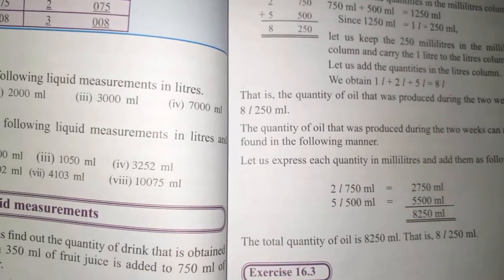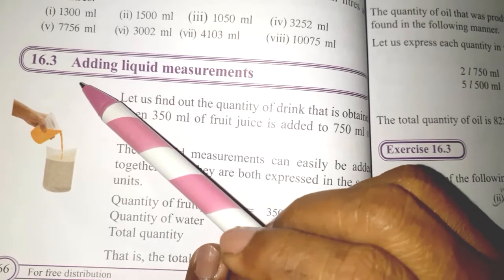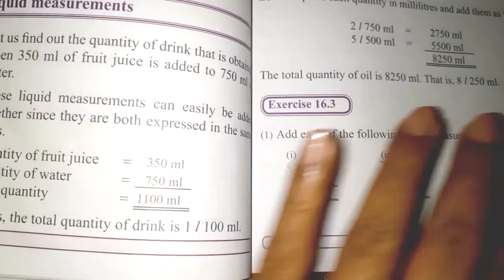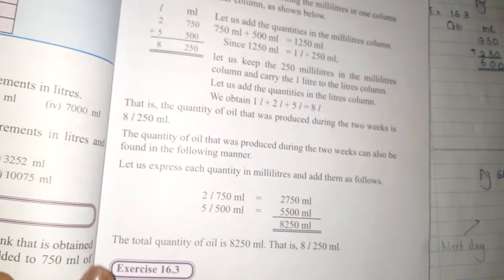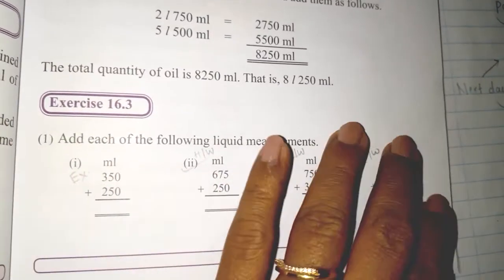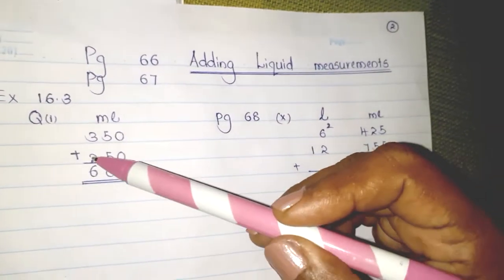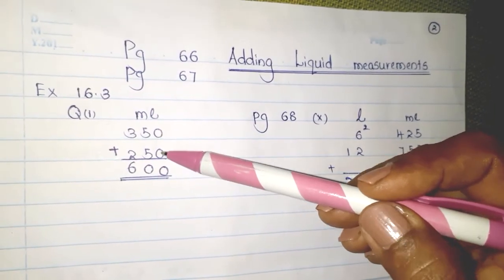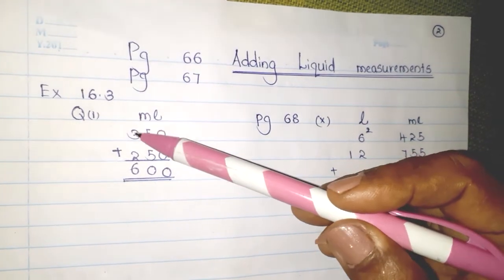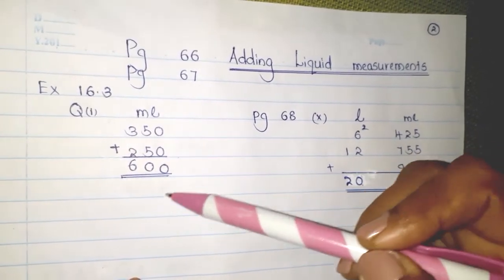Now, adding liquid measurements — it is very easy. Turn to page 67, Exercise 16.3. Question 1: they have given values in milliliters — 350 milliliters and 250 milliliters, and you have to add them. 0 plus 0 is 0; 5 plus 5 is 10, carry 1; 2 plus 3 is 5, plus 1 carried is 6. So the answer is 600 milliliters.